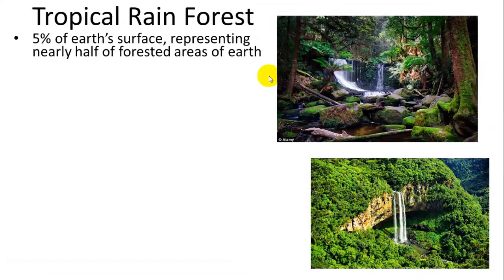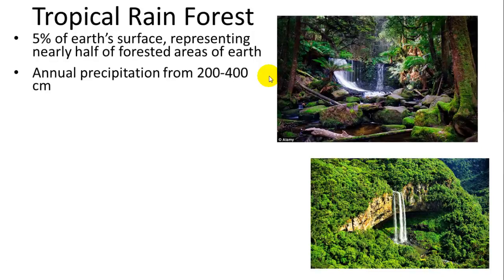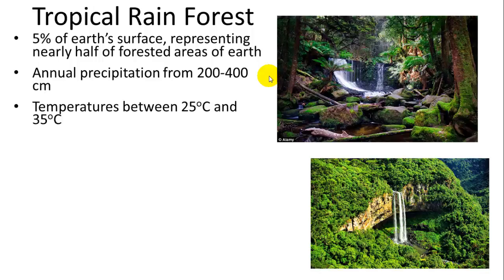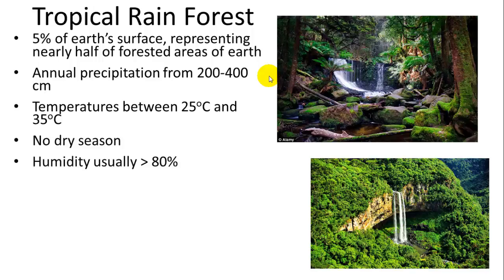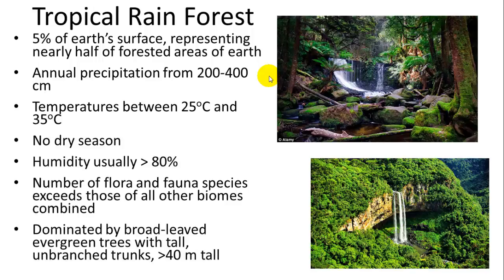The tropical rainforest covers five percent of the Earth's surface but contains a significant amount of the biomass. It has very high annual precipitation — 200 to 400 centimeters. Temperatures range between 25 and 35 degrees Celsius and generally do not fluctuate much because these forests are on the equator. There is generally no dry season and the humidity is usually very high — it's a hot, humid, wet area.